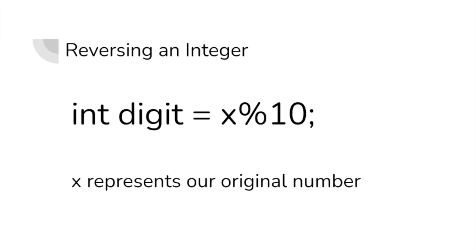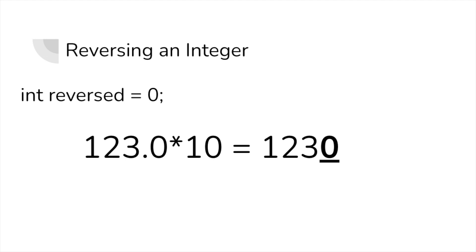Once we've isolated this digit, make sure to save it in a variable called digit. Now that we have our isolated digit, we have to turn it into our reversed number. We can start this by making a new variable called reversed, which represents our reversed number.